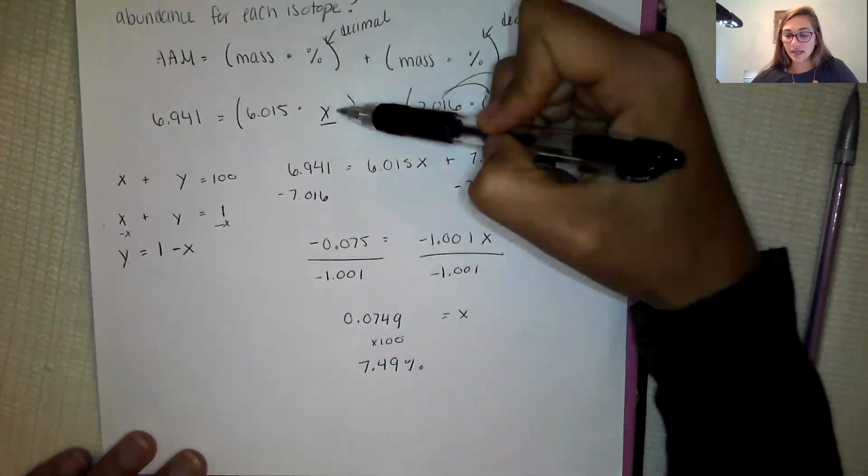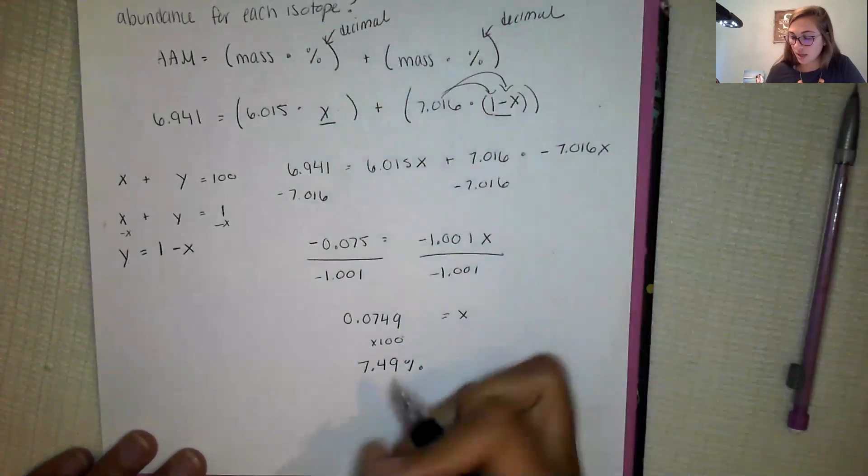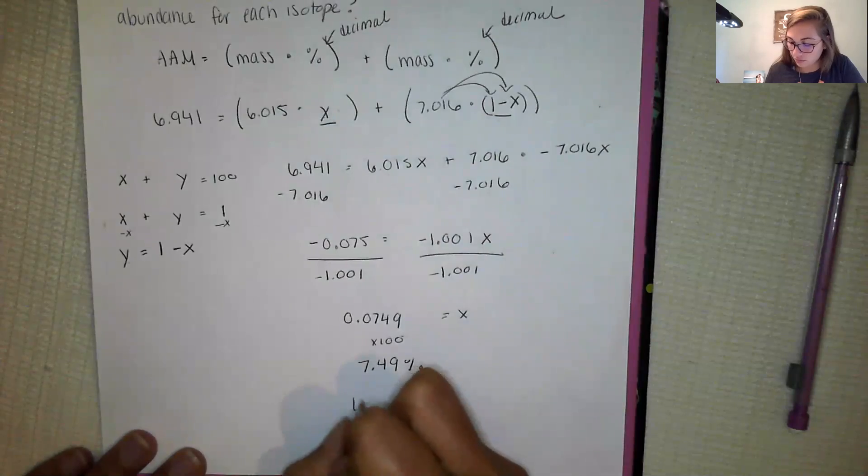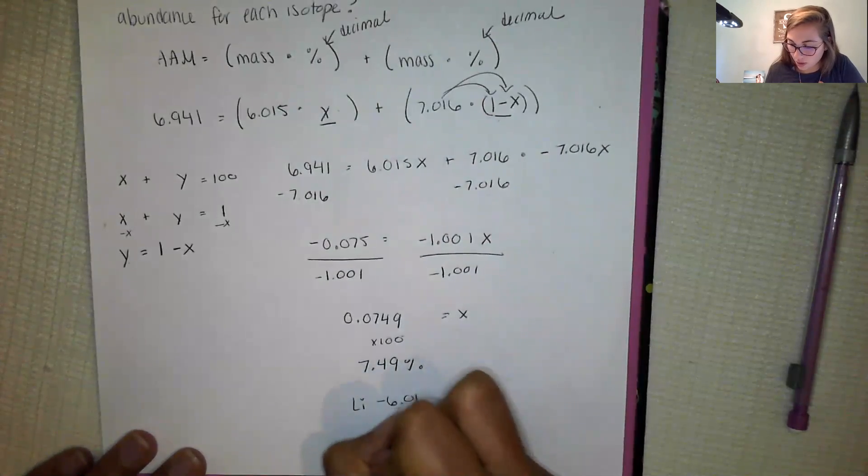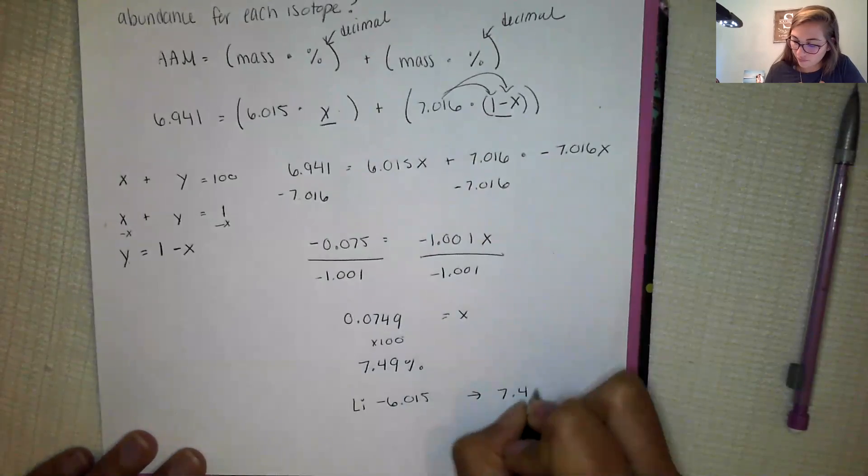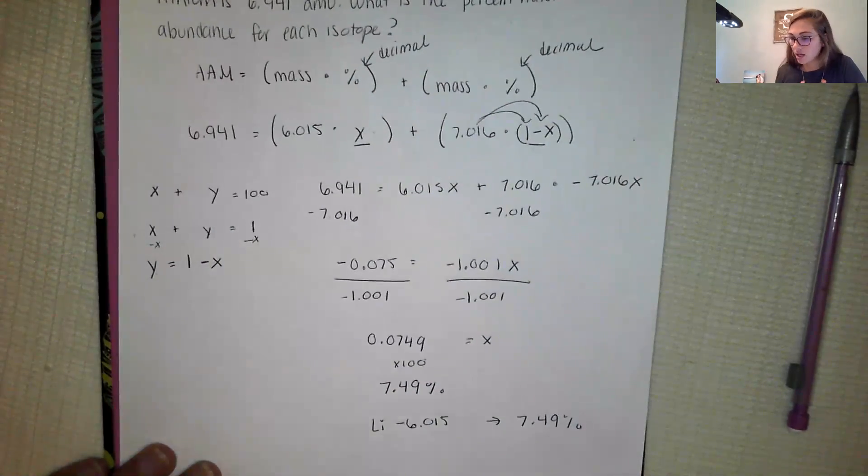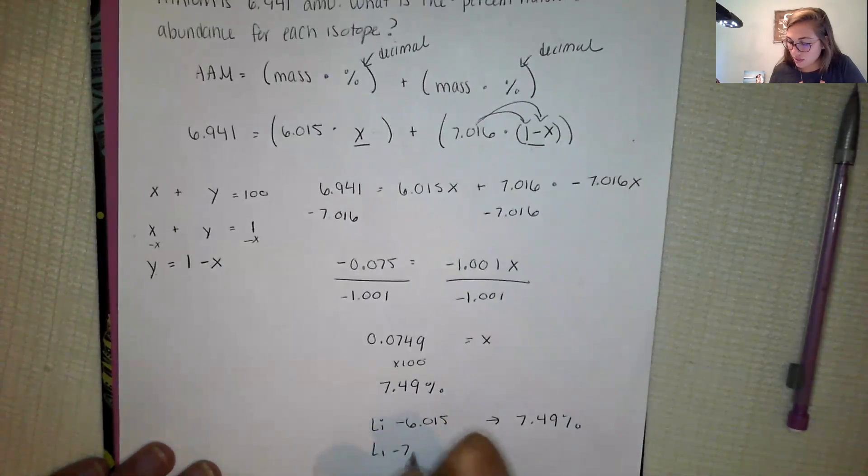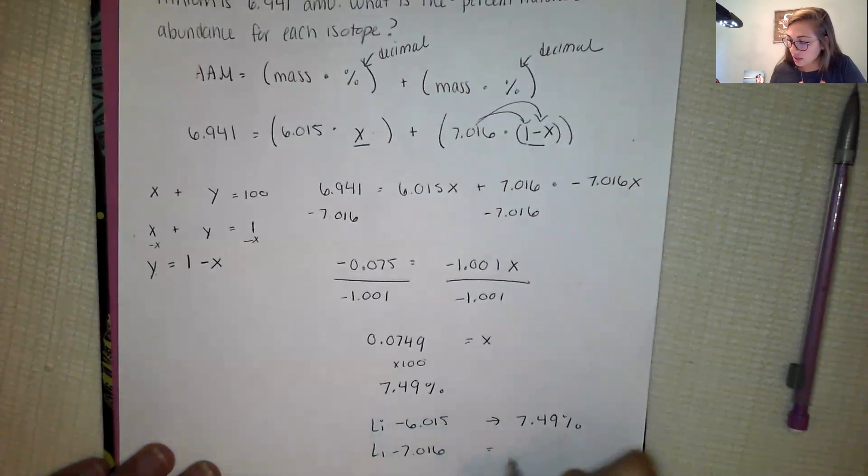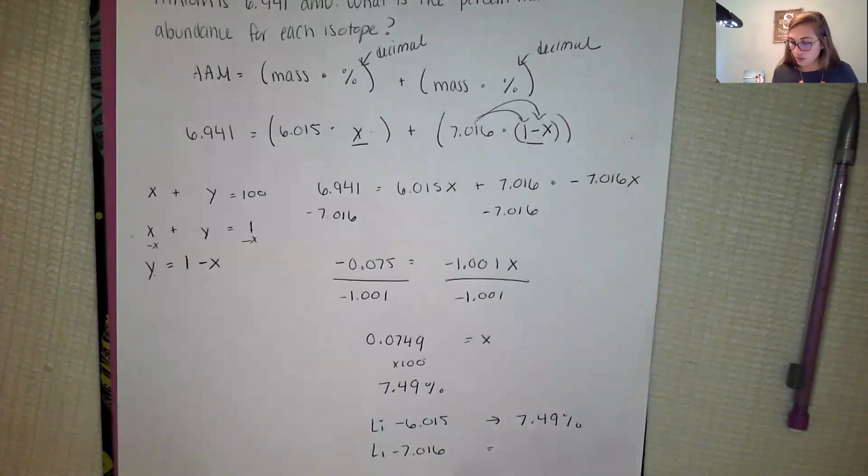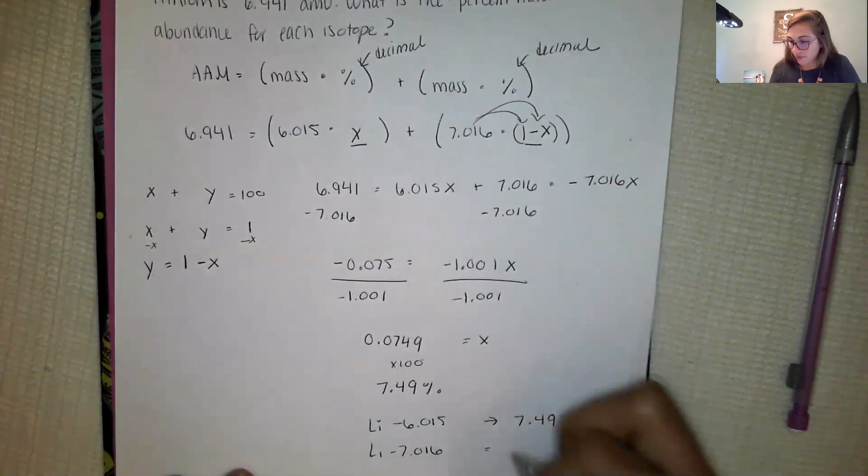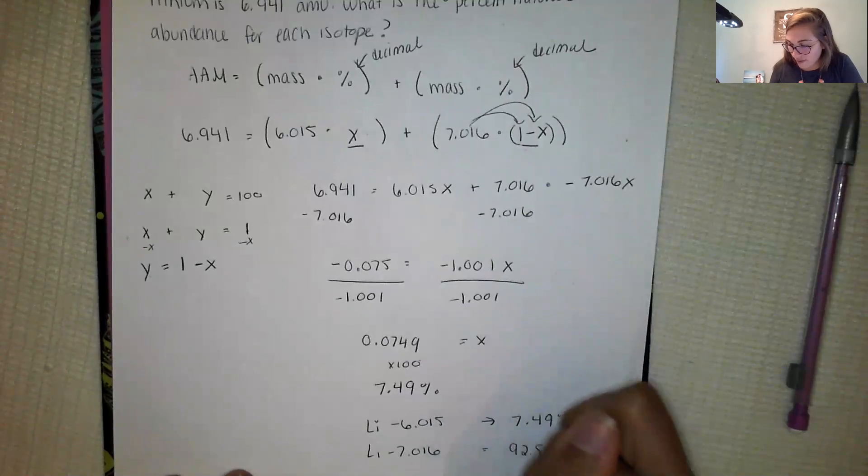Well we set X as this one so that means that lithium 6.015 has a percentage of 7.49 percent. We know that all percentages add to 100 so lithium 7.016 would be 100 minus 7.49 and that comes out to 92.51 percent.